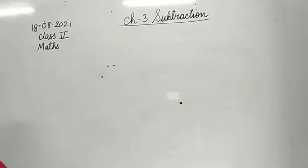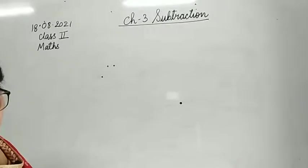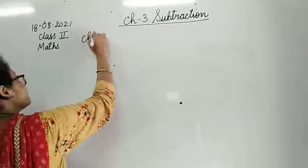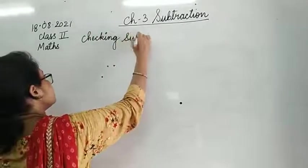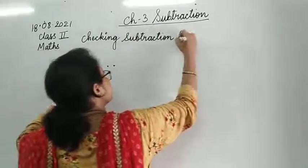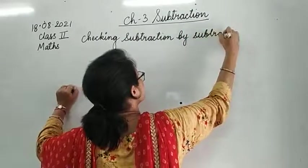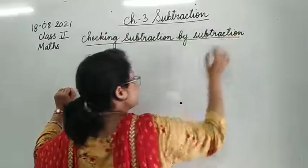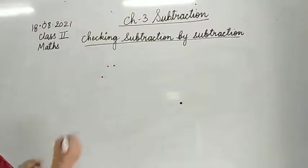Next, page 66 done. Now we will do page 67: checking subtraction by subtraction. We will check subtraction by doing another subtraction.